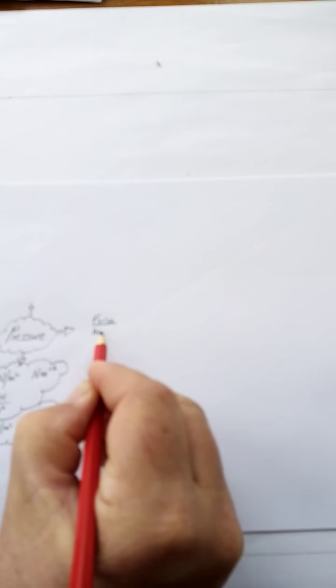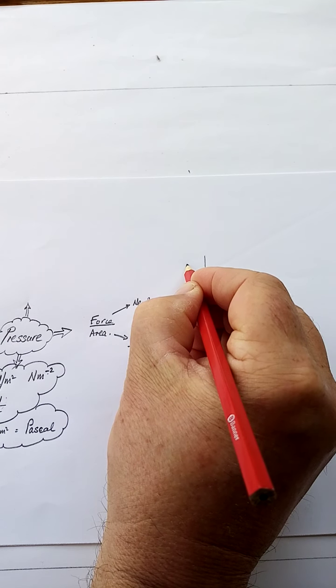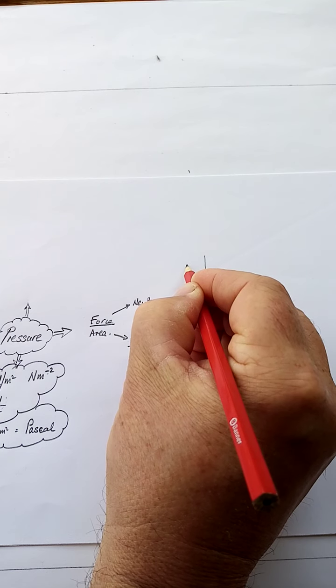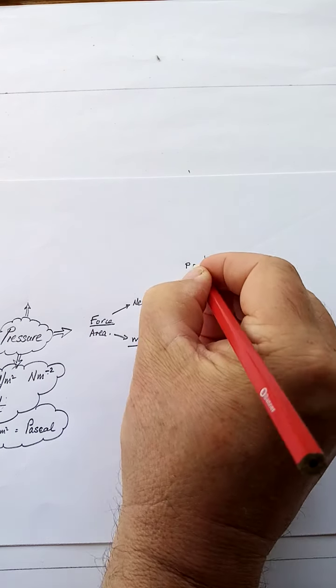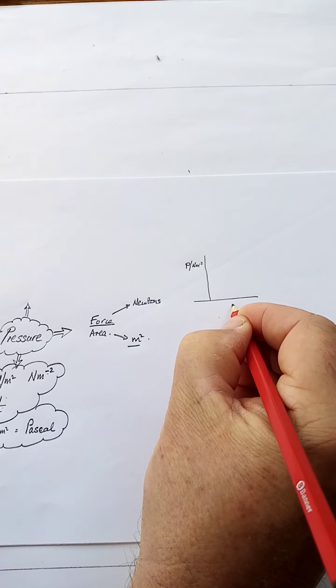So pressure definition is the force over the area. That's the definition. Force measured in newtons. Area measured in meters squared. And a couple of simple relationships. What's the relationship between pressure in newtons per meter squared and force?